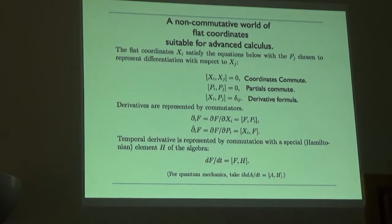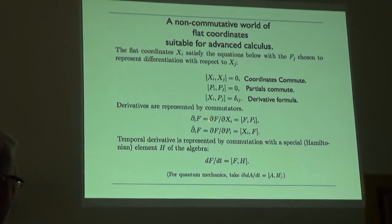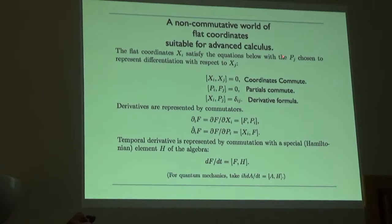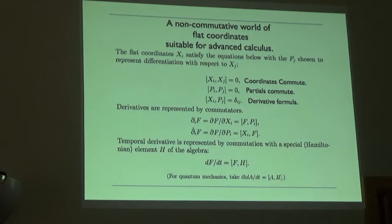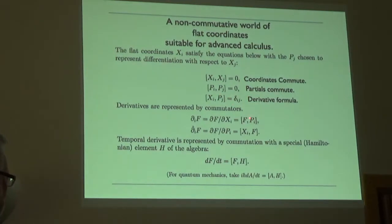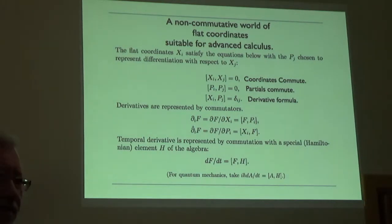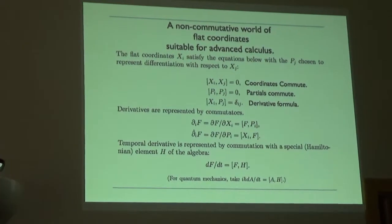We're representing derivatives by commutators. So I have df/dxi, partial derivatives, and calculus involving variables x1 through xn. The derivative with respect to xi is the commutator of pi. I assume that these fellows doing the work of making the derivatives happen commute with one another, which has the effect of making the derivatives commute with one another. So this is a flat world. In a curved world, derivatives don't necessarily commute with one another.